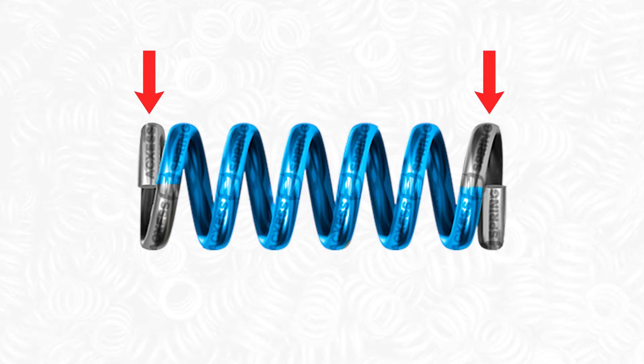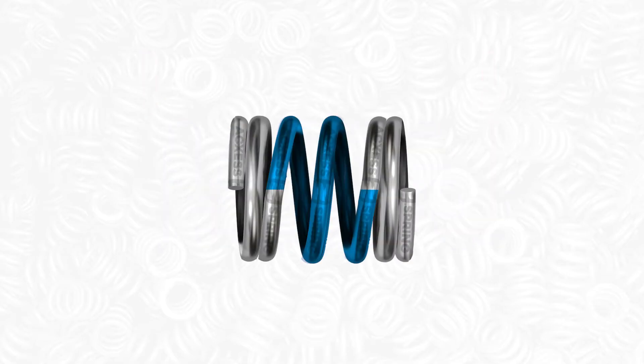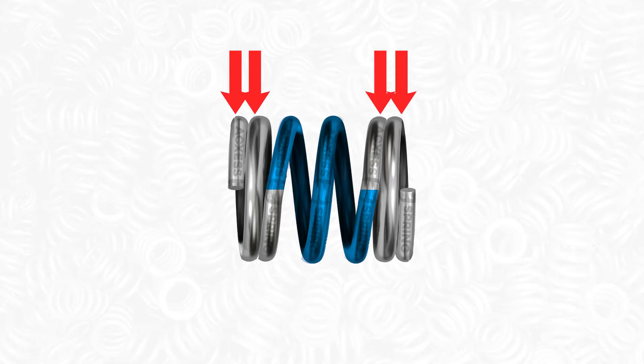Sometimes compression springs have more than one closed coil on each end, and in those cases you'll need to subtract all your closed coils from the total coil count to obtain your active coil count.